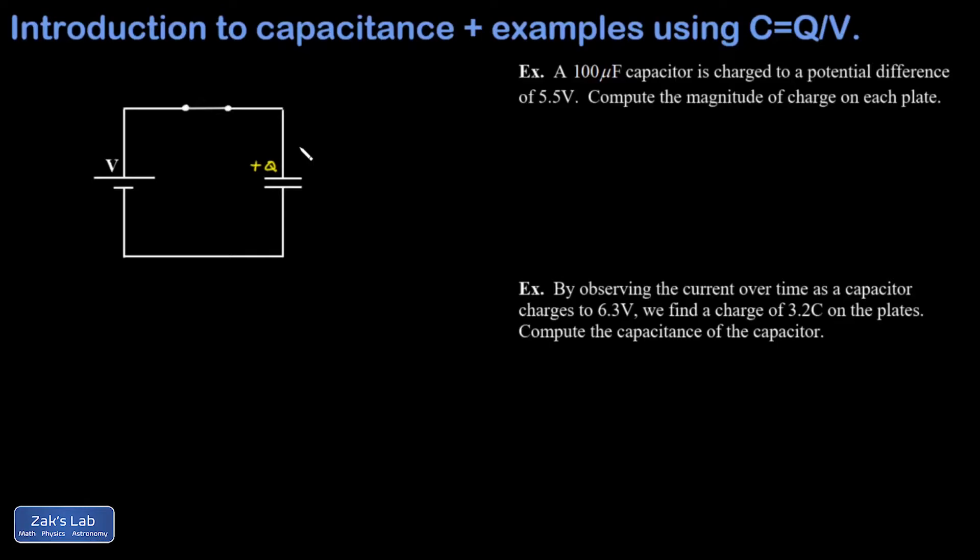But there's a really important question. Where did the plus charge come from? And since batteries don't create or destroy charge, this positive charge must have come from removing a charge of Q from the bottom plate. So when we talk about the Q in a capacitor, Q is just the magnitude of the charge on one of the plates.